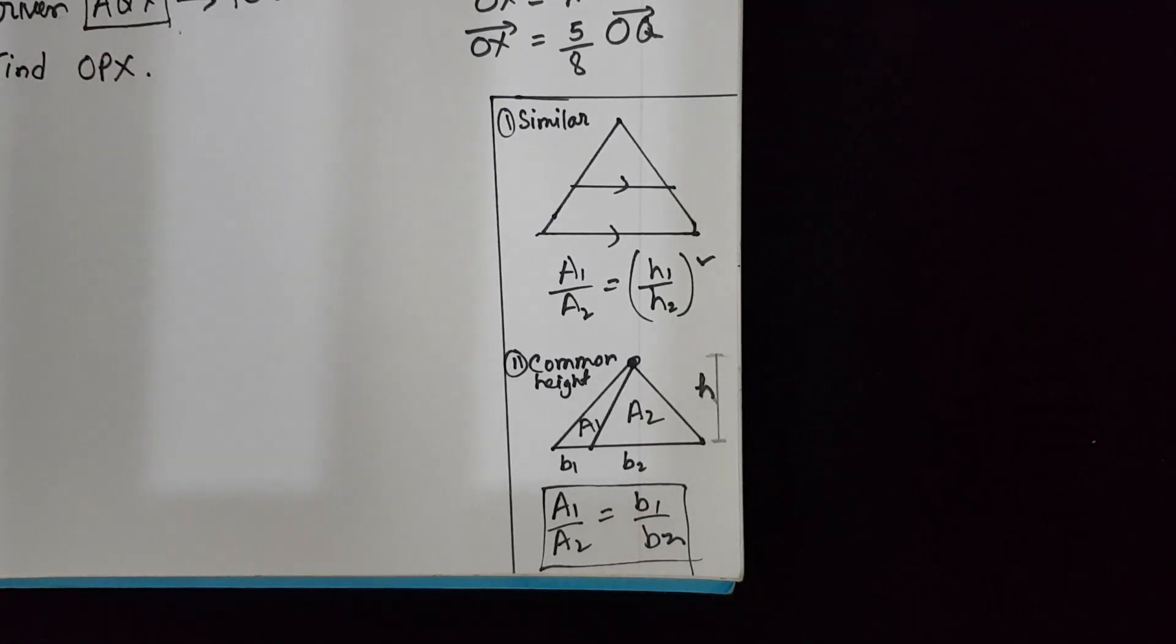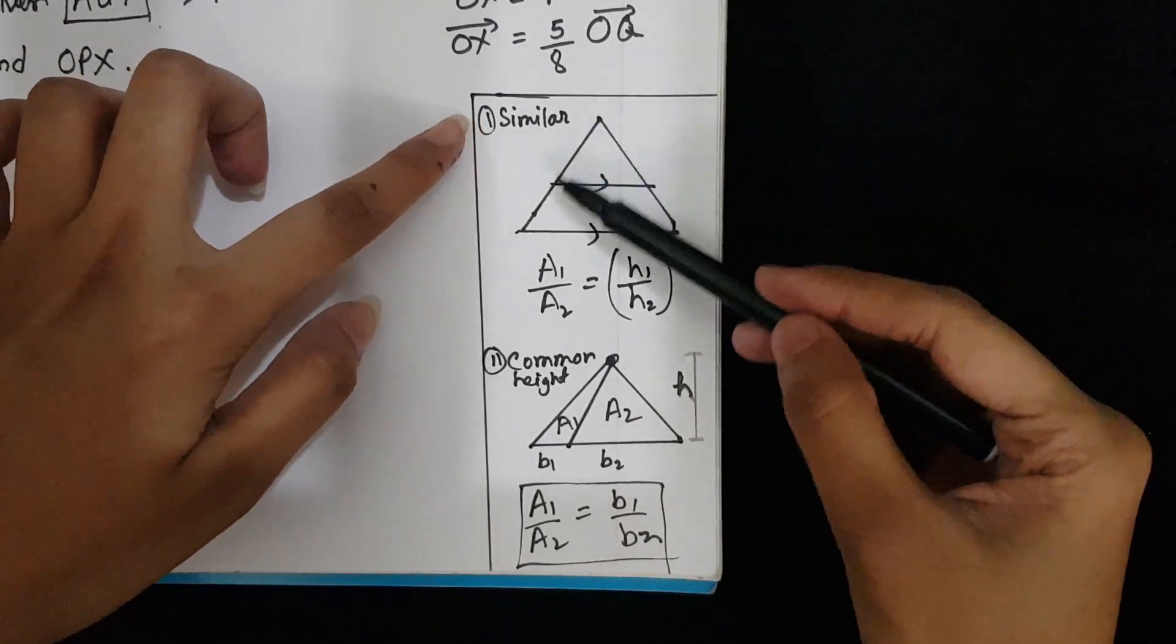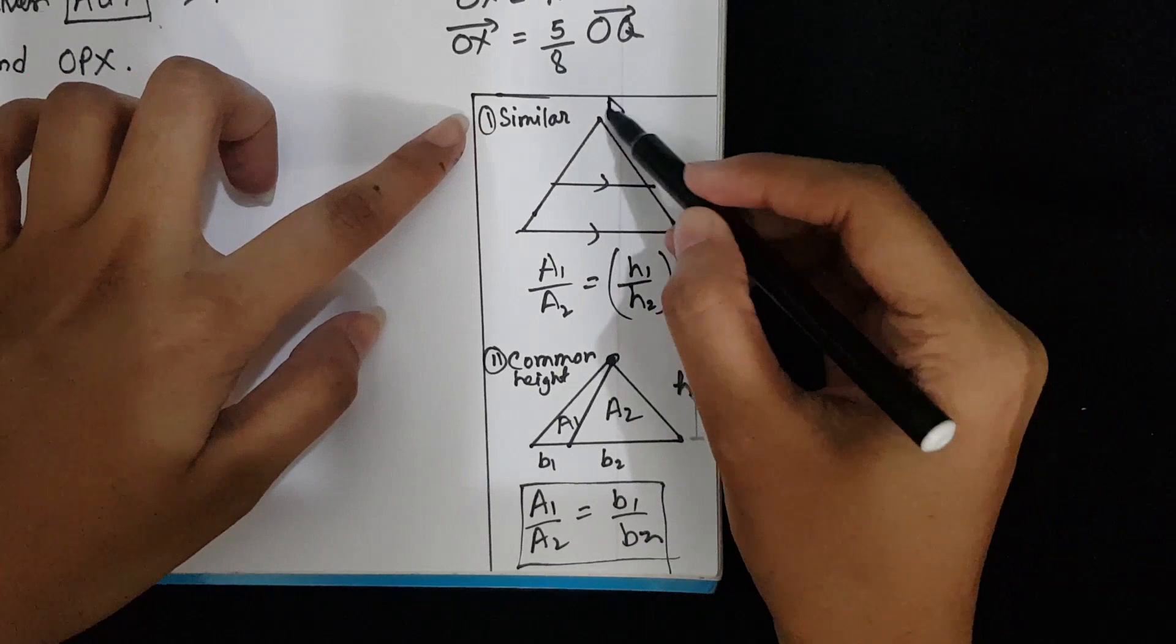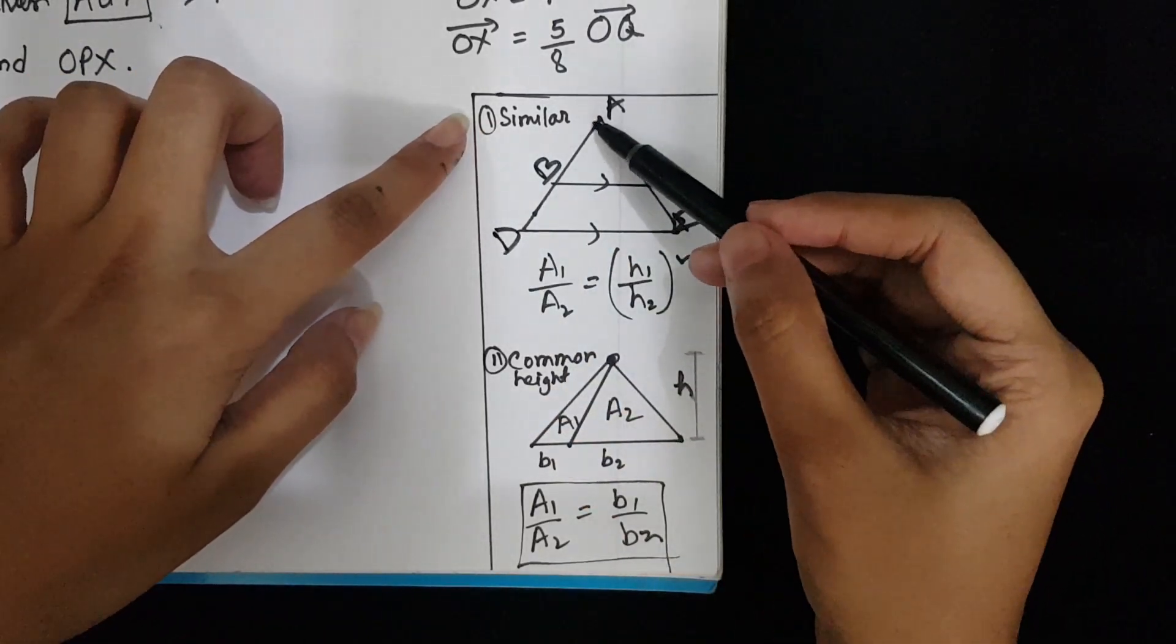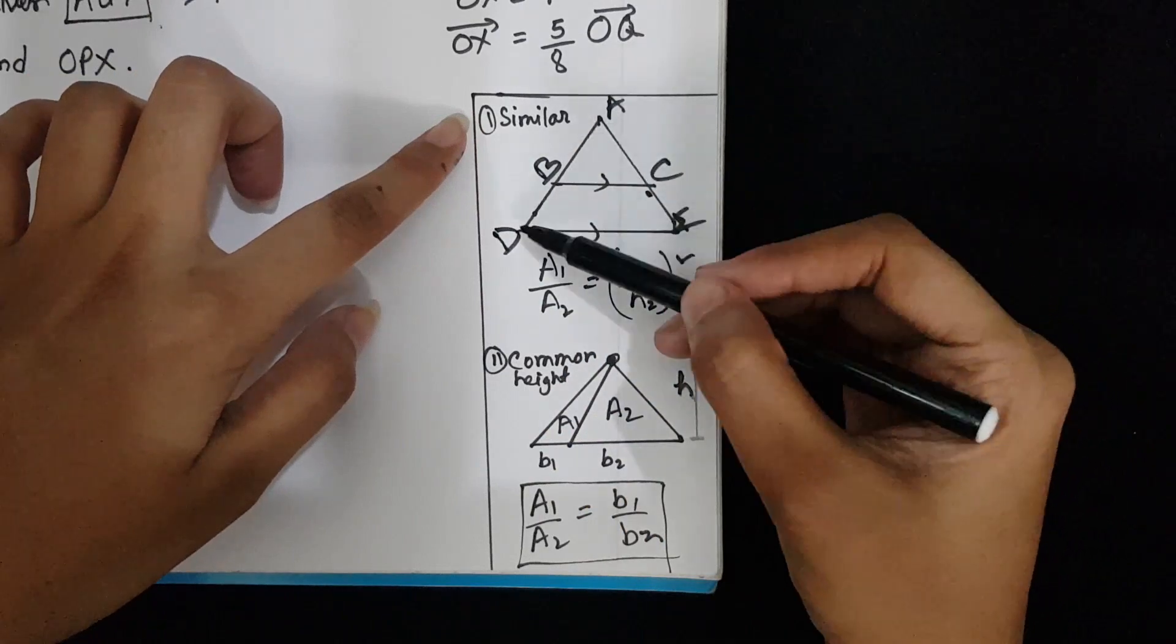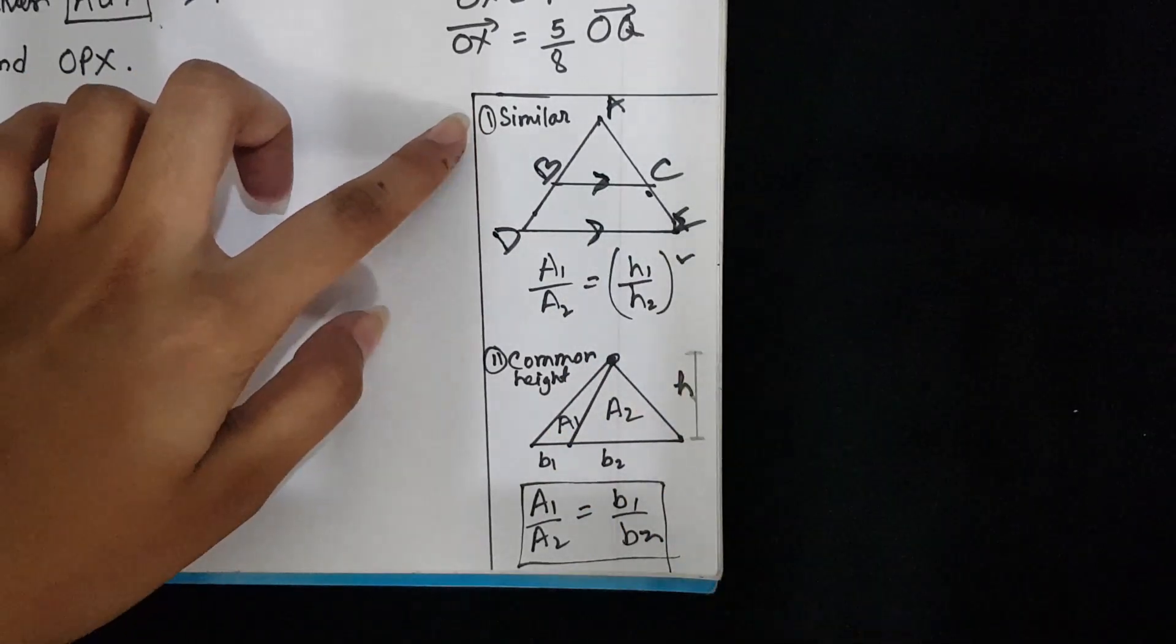In Maths B Vector, you will get two types of triangles. For example, type 1: if there are two similar triangles ABC and ADE, triangle ABC and triangle ADE are similar to each other because BC and DE are parallel.